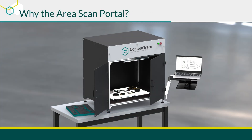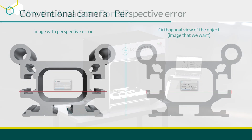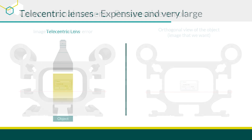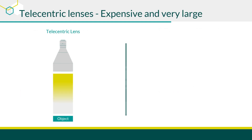The Area Scan Portal was developed to address several critical challenges in object scanning and contour extraction. Conventional cameras often introduce perspective errors, leading to distorted contours and inaccurate measurements. Telecentric lenses are accurate. However, they are expensive and impractical for large objects or objects with significant height.